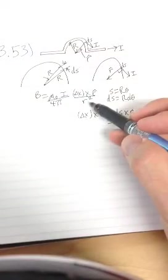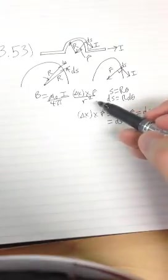The r squared in this will become big R squared, and the rest is just constants.